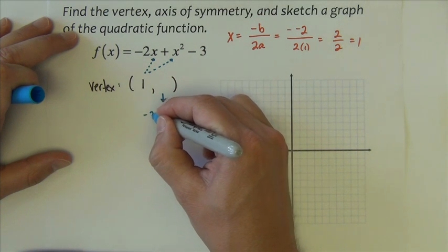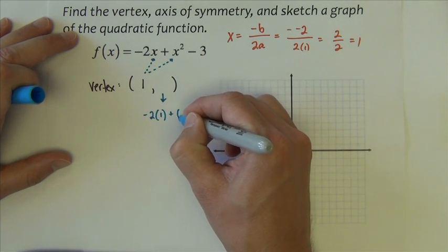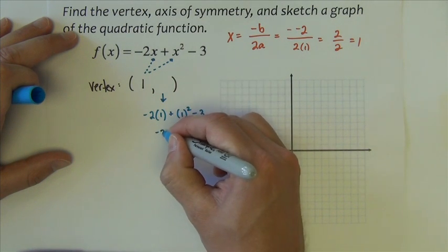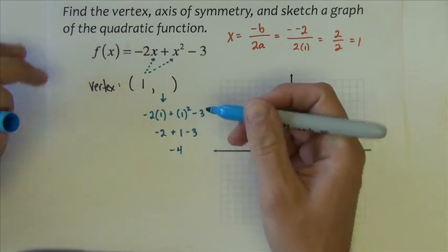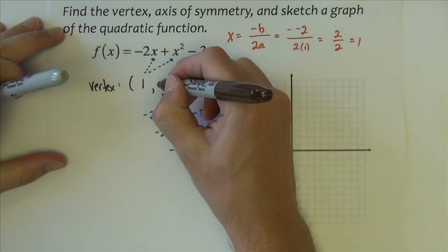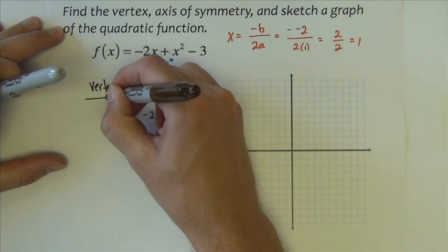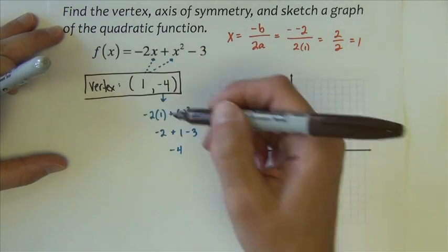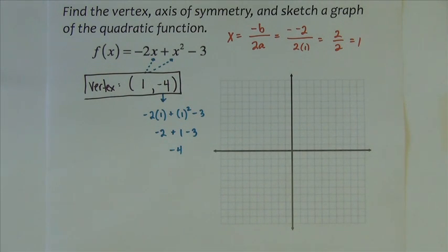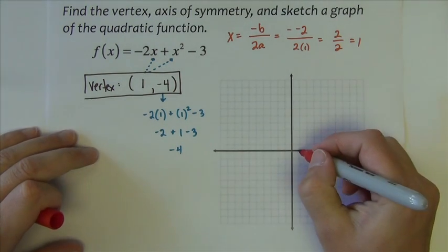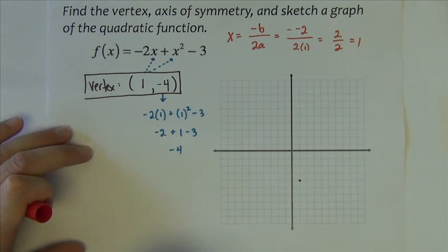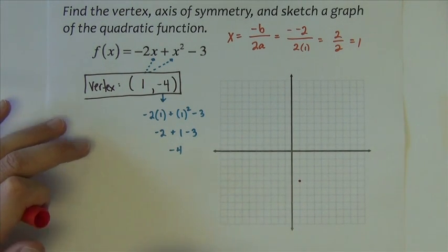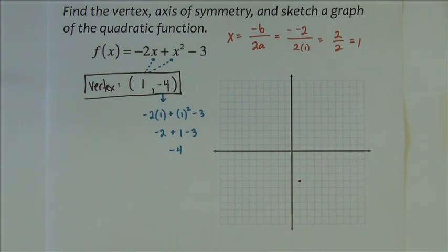Now to find the Y value of the vertex, we just have to take this value and plug it in. So to find this, we're going to do negative 2 times 1 plus 1 squared minus 3. So that's negative 2 plus 1 minus 3, which is negative 4. So there's our vertex. This graph starts at 1, negative 4. Go ahead and put that on the graph.